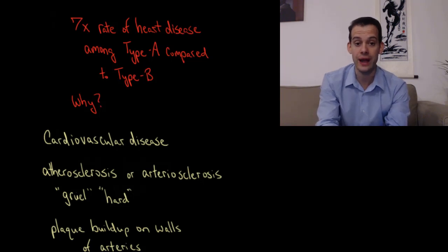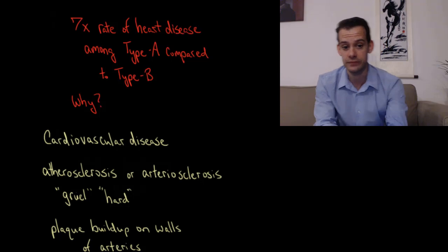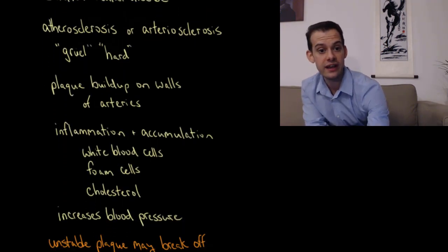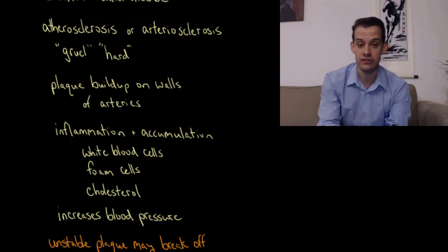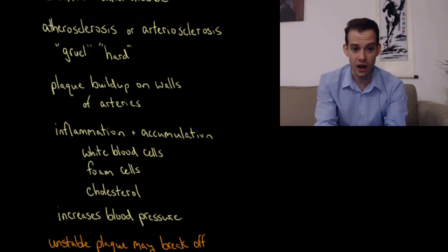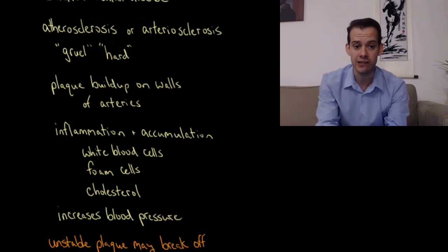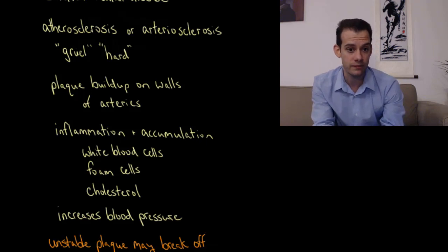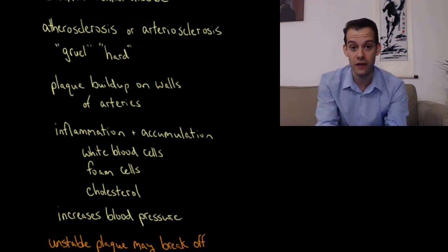Well in order to understand why we have to go into a little more detail on heart disease or cardiovascular disease. Now one of the main symptoms in cardiovascular disease is atherosclerosis, also called arteriosclerosis. And atherosclerosis comes from the Greek for gruel and hard, and it refers to a thickening and hardening of the arterial walls and a buildup of plaque on these walls.